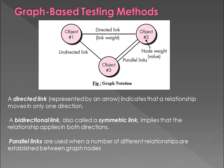In a simple diagram you can see object one, object two, and object three with different types of links. A directed link indicates a relationship in only one direction, represented by a single arrow. A bidirectional link, also called a symmetric link, has a relationship in both directions. Parallel links are used when multiple different relationships are established between two graph nodes, drawn as two parallel lines.